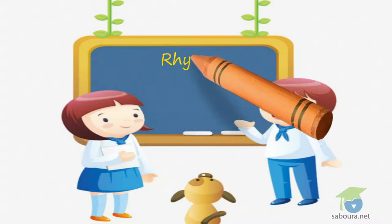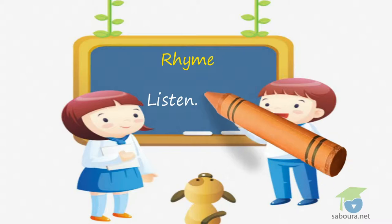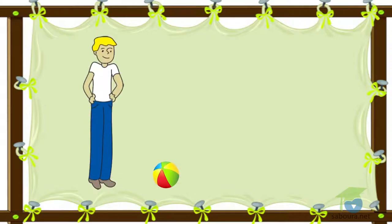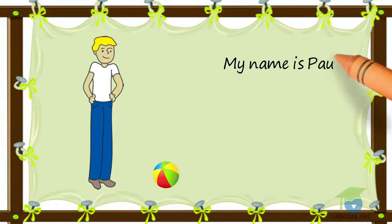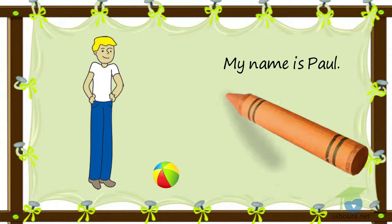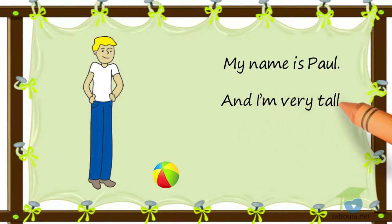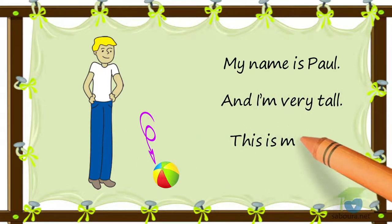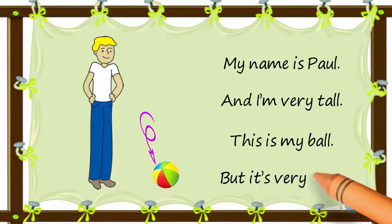Rhyme. Listen and say. My name is Paul, and I'm very tall. This is my ball, but it's very small.